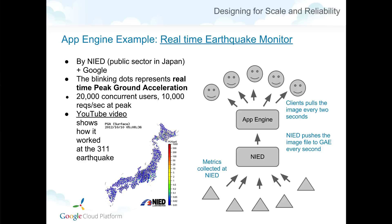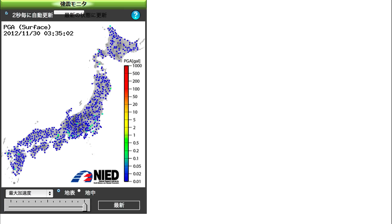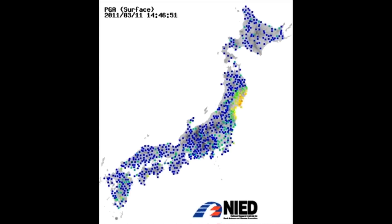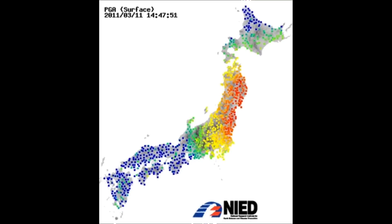Here's an excellent example of an App Engine application called the Real-Time Earthquake Monitor. It's built by the NIED, developed by the public sector in Japan. This is the actual app running — you can see many blinking dots, blue or green, on the map of Japan. Each dot represents the acceleration of the ground surface right now in Japan. If there's an earthquake, you'll see yellow or red dots spreading out over that region. I have a demonstration showing how it worked during the 311 disaster, with red and yellow dots spreading from the northern part of Japan.